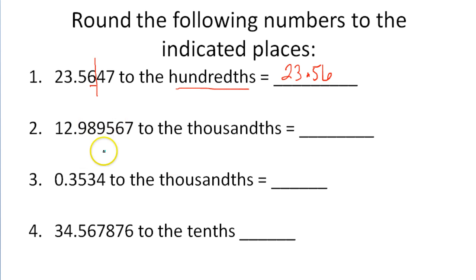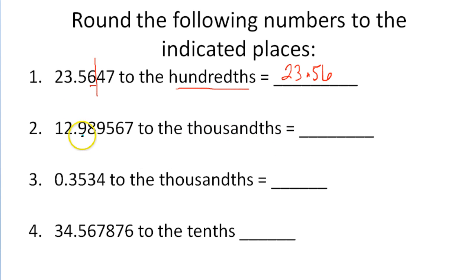Let's take a look at the next one. We've got 12.989567, and I'm asking you to round this to the thousandths place. Here is the tenths place, here is the hundredths place, and here is the thousandths place. So we want to round this answer to the thousandths place.